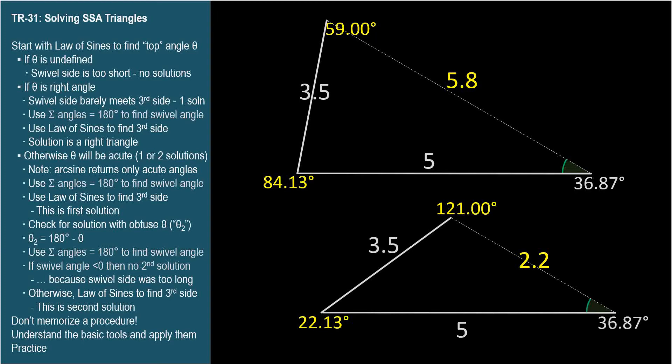when we found the first angle using the law of sines, we used the acute angle that the arc sine function gave us. Then, we found the last angle using the sum of angles, and we found the last side with the law of sines again.